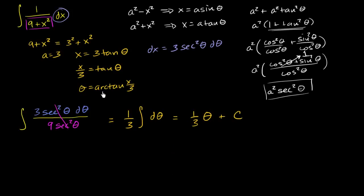Now we just have to put things in terms of x. We see theta equals arctangent of x over 3. So this is going to be equal to 1 third arctangent of x over 3 plus c. And we are done.